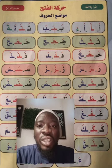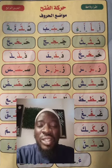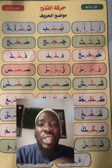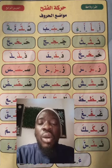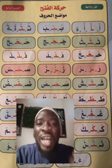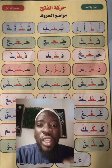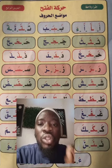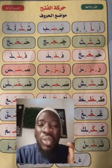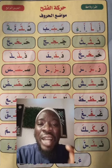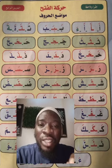Al-Fathah sounds A, as we have Al-Kasra which sounds E, and we have Al-Dammah which sounds as U. From this page, you can see the examples of how the Fathah would sound with each and every letter of the Arabic alphabet.